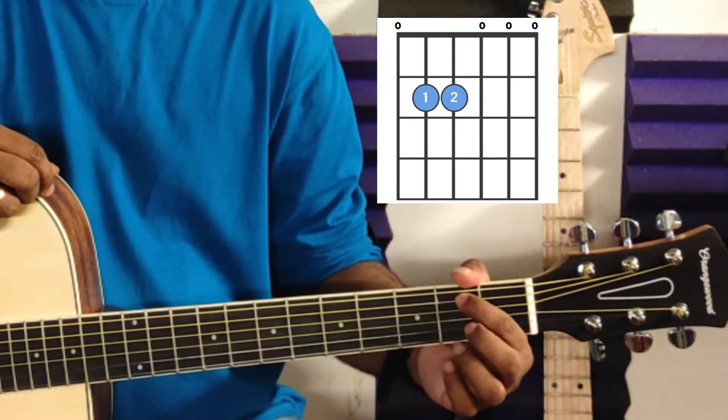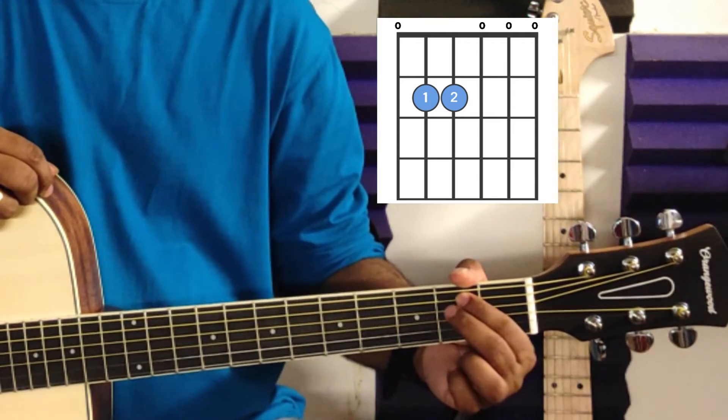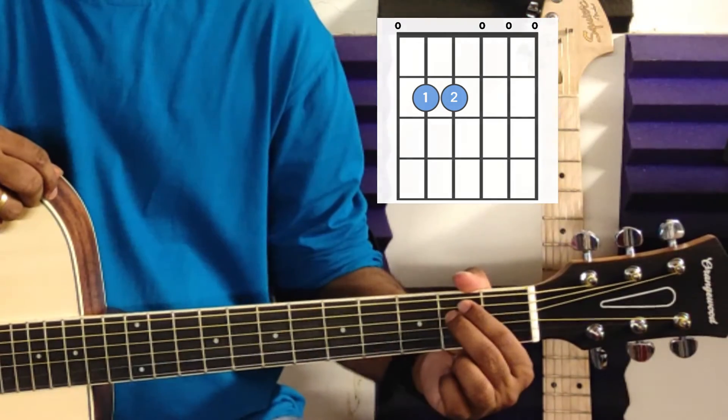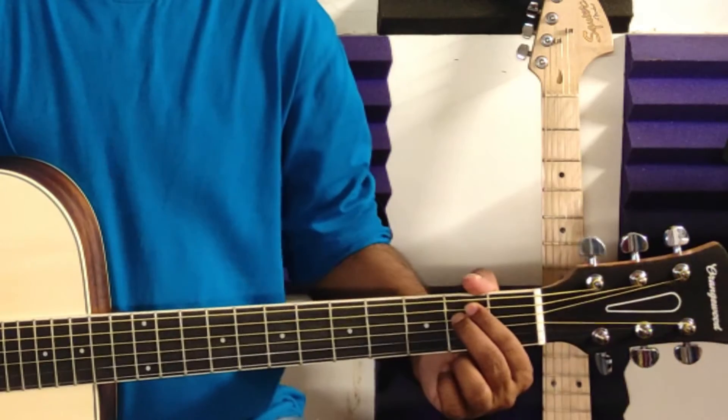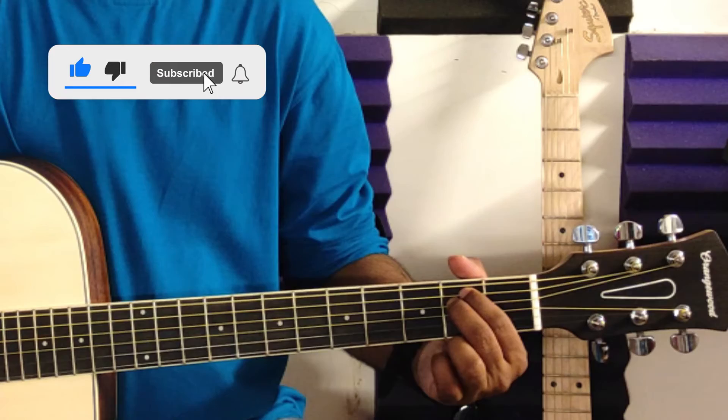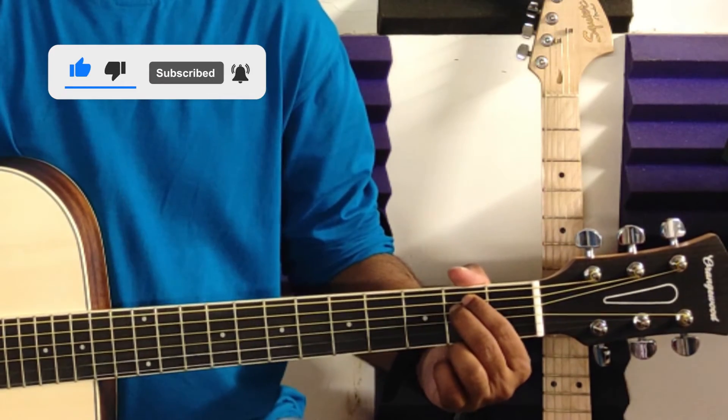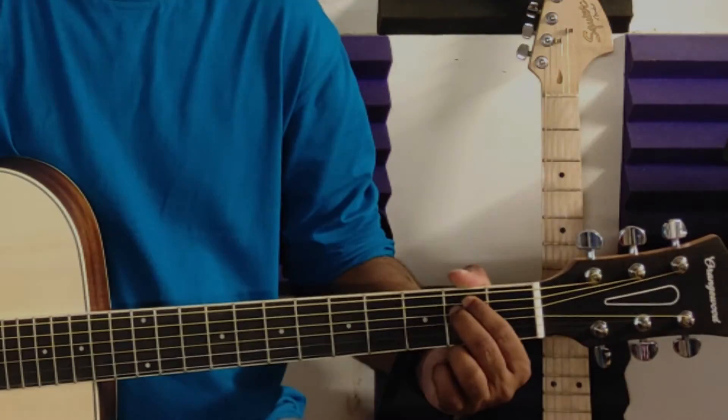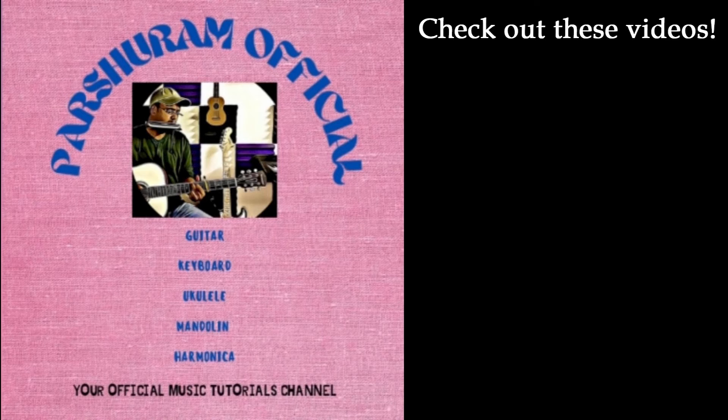The fifth string second fret with the index finger, the fourth string second fret with the middle finger, and you can play all six strings. That's E minor chord in the open position.